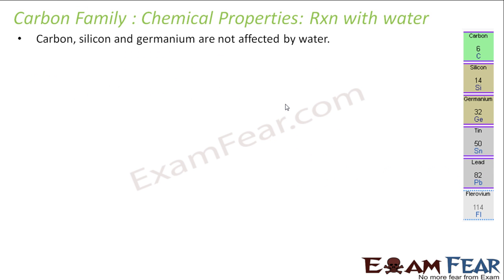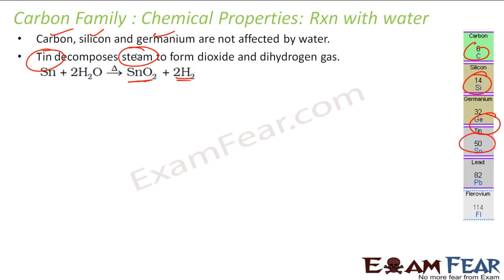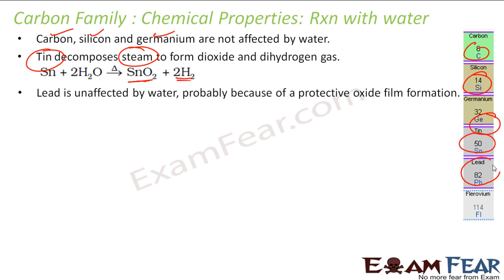Let's talk about the reaction with water. Carbon, silicon, and germanium are not impacted by water. Tin reacts with hot water to form its dioxide and gives dihydrogen gas. With lead, it forms a protective oxide layer — similar to aluminium — which prevents further reaction with water.